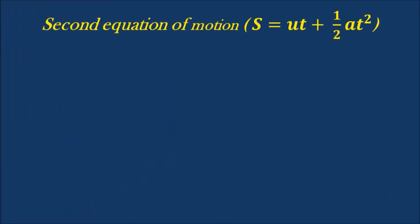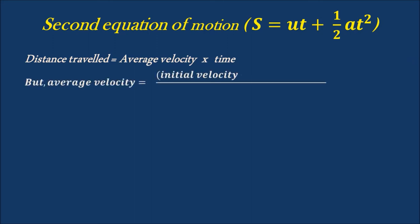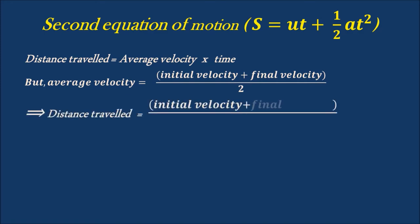Let's now derive the expression for the second equation of motion, which is S equal to UT plus half AT square. We know that distance traveled is equal to average velocity into time. But average velocity is equal to initial velocity plus final velocity by 2. That implies distance traveled is equal to initial velocity plus final velocity by 2, into time. That implies S is equal to U plus V by 2, into T — let it be equation A.